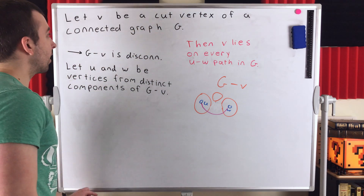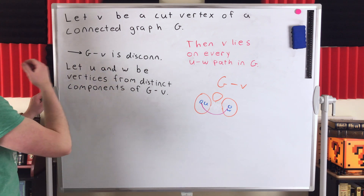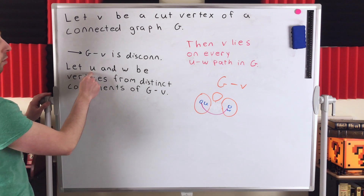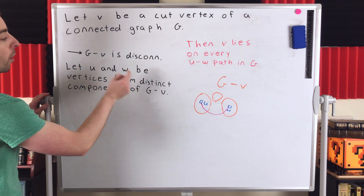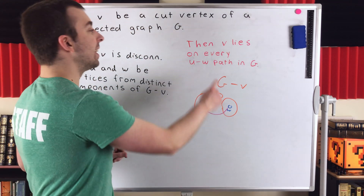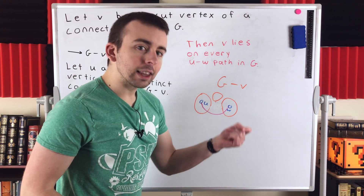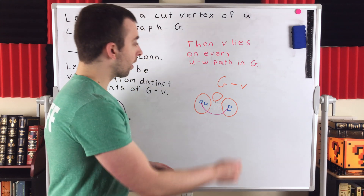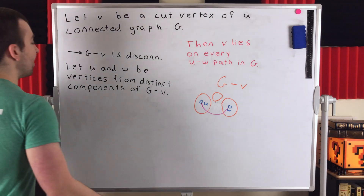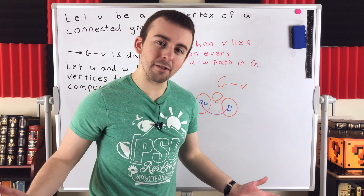Let V be a cut vertex of a connected graph G. Then G minus V is disconnected and thus has at least two components. Let U and W be vertices from distinct components of G minus V. Then that cut vertex V lies on every UW path in G. Because if V did not lie on every UW path in G, then U and W would still be connected in G minus V, and thus they couldn't possibly be from distinct components. That's the theorem and that's why it's true.